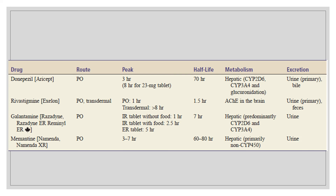For the preparation and administration of Alzheimer's disease drugs: donepezil (trade name Aricept) is given PO, with a peak of 3.5 hours and a half-life of 70 hours. Metabolism is hepatic and it is excreted via urine and bile. Next is rivastigmine (trade name Exelon), which can be given PO or transdermally. PO peak is 1 hour and transdermal peak is more than 8 hours. The half-life is 1.5 hours, metabolism is by acetylcholinesterase in the brain, and excretion is via urine and feces.